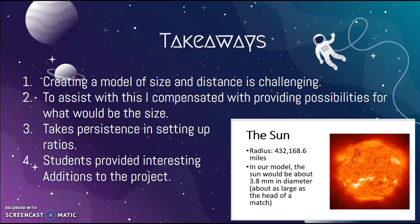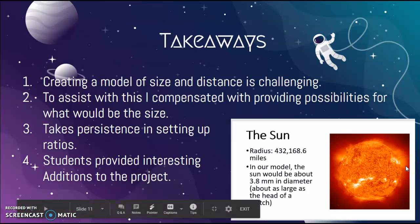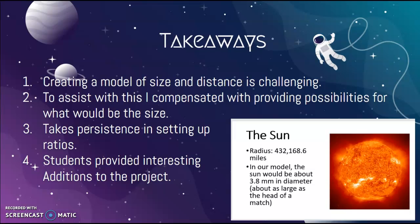It was incredibly hard to create a model that used both size and distance. To compensate for that, I provided things that would show what the size would have been instead. Students could take that and actually create a size model, choosing a specific size they wanted for the Sun and varying everything based off of that. It also took persistence because I set it up at the beginning of the day and worked on it during my prep, and it was really hard to have students not knock things over as I was actually creating this.